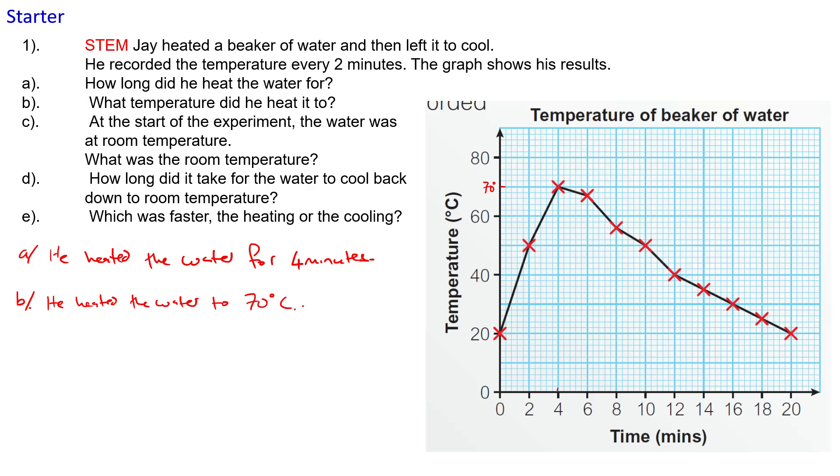And we'll put 70 degrees C because those are our units. c: at the start of the experiment the water was at room temperature. What was the room temperature? Well, at the start, at time equals zero, the water was at 20 degrees, so room temperature at the start was 20 degrees.